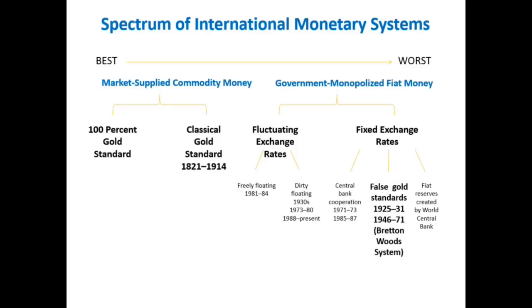The original money that arose on the market was always a commodity standard. We've had a 100% gold standard for centuries — gold, silver, going back even further, copper, brass, leather in Roman times. In the lecture on money, you should have been acquainted with these different types of commodity standards. But eventually, silver and gold arose as the best qualified metals to serve as money.